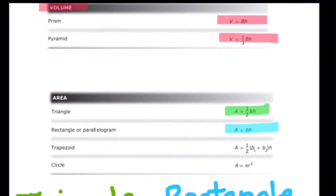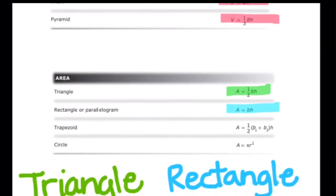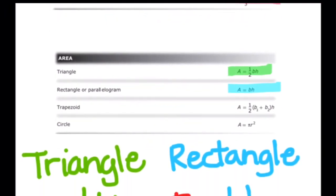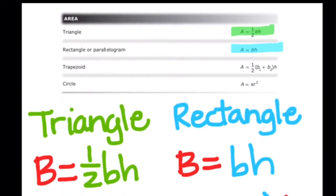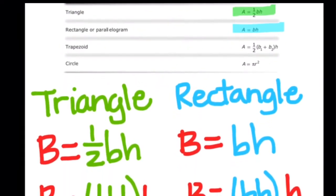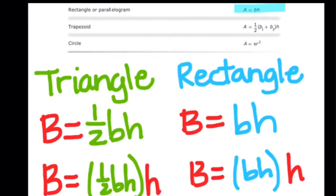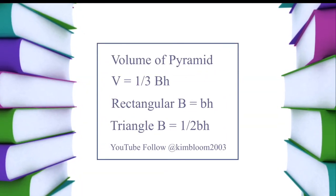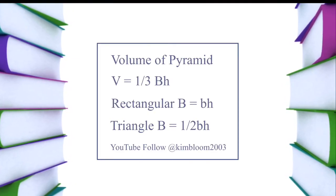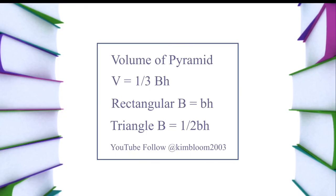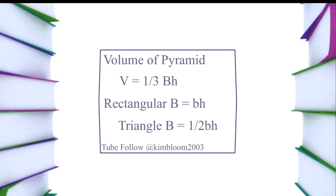You can find all of these formulas on your chart. Please pause to look closer if you would like. I wanted to show you that even though you can find the volume formula, you may want to replace big B with the area formula for the identified base. Remember that the volume of a pyramid is V equals one third big B times H, where the rectangular has a formula of BH for area, and a triangle has a formula of one half BH.